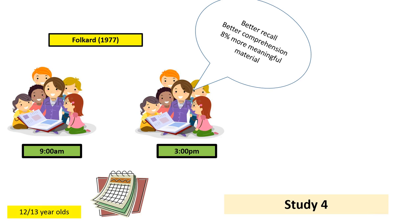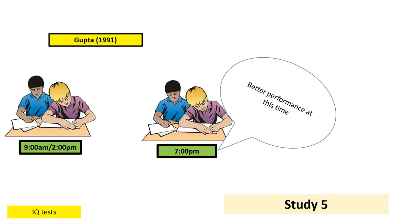Folkard in 1977 had researchers read a story to 12- and 13-year-olds at either 9 o'clock in the morning or 3 o'clock in the afternoon. They found that students who had been read to at 3 p.m. had a better recall of the story one week later — better comprehension and remembered 8% more meaningful information compared to the group read to at 9 a.m. This clearly supports the notion that the later in the day, the higher our temperature and the better our cognitive ability. Five studies is all you need to write an essay on this topic to still score top A grades, so do not try to cram any more than this.